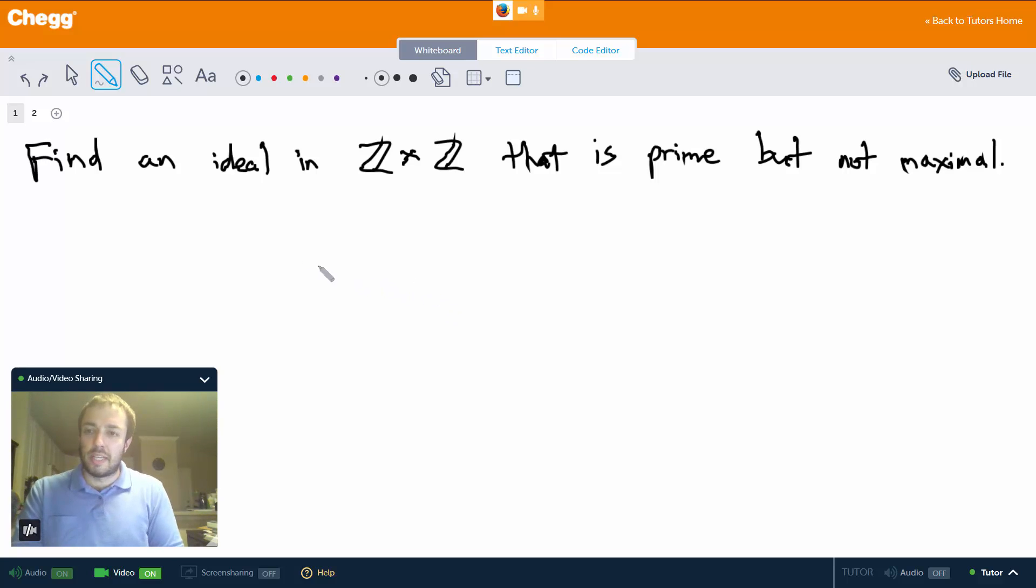In this video we're going to find an example of an ideal in Z×Z that's prime but not maximal, and we're going to use the first isomorphism theorem for rings to do this.